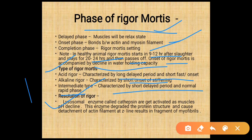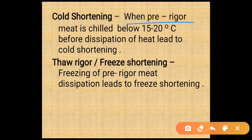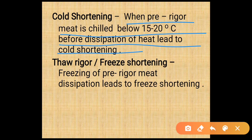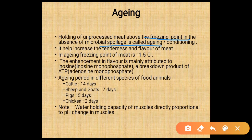Resolution of rigor: lysosomal enzymes called cathepsins are activated as muscle pH declines. Cathepsins degrade the protein structure, causing detachment of the actin filament from the Z-line, resulting in fragmentation of myofibrils. Cold shortening occurs when pre-rigor meat is chilled below 15 to 20 degrees Celsius before heat dissipation. Thaw rigor or freeze shortening results from freezing of pre-rigor meat. Aging is the holding of unprocessed meat above freezing point in the absence of microbial spoilage; it is also known as conditioning.